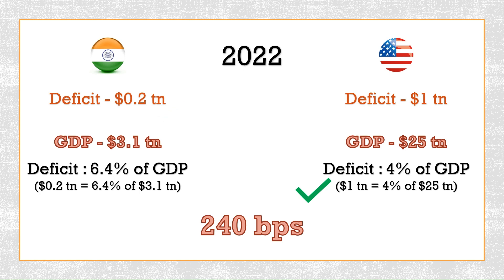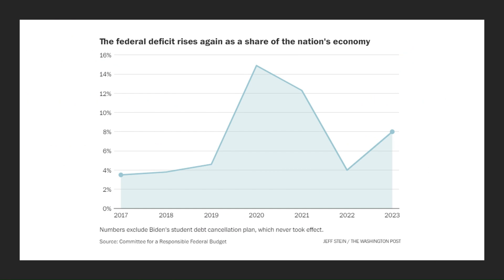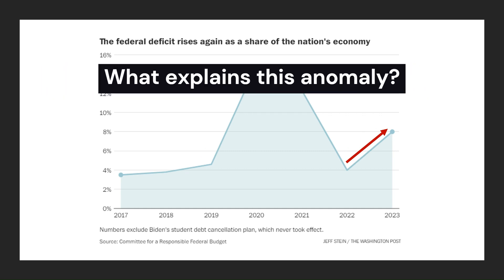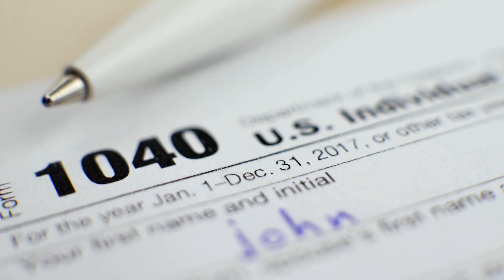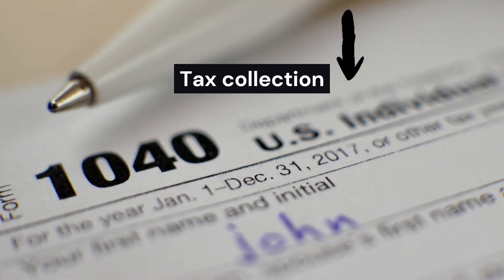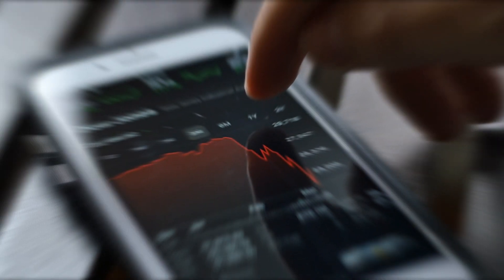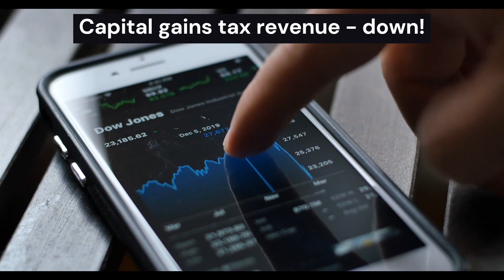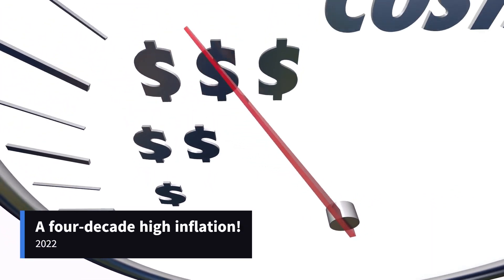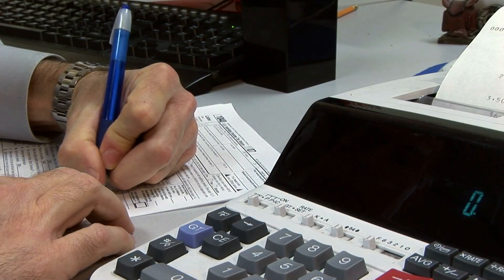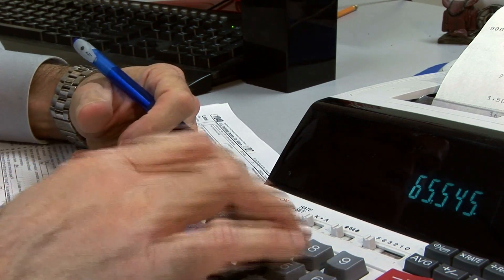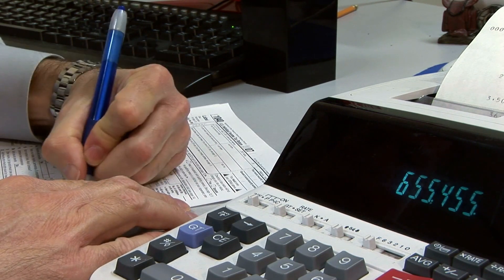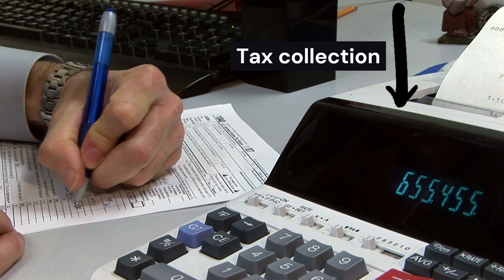Bigger economies can tolerate bigger deficits, and the same is true for the national debt. For the United States, even the fiscal deficit as a share of its GDP is doubling this year compared to the last. There is a two-part explanation that experts provide for this trend. First, the government is on track to take in substantially less in new revenue this year, in part because of the stock market slump last year. This will lead to a sharp drop in capital gains tax revenue. Then the US experienced a 40-year high inflation in 2022, and automatic adjustments to the tax brackets to account for this inflation spike also reduced tax obligations for many Americans. As a result, the government's income is going to be lower this year than what it was last year.